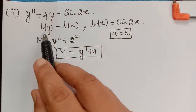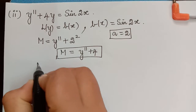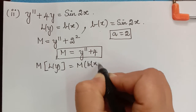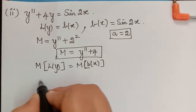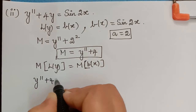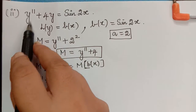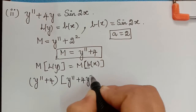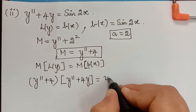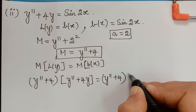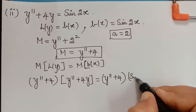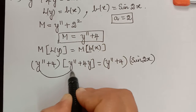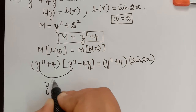Now we operate with M on both sides of the equation, that is M[L(y)] = M[B(x)]. M is (D² + 4) and L(y) is y'' + 4y, so we apply (D² + 4) to (y'' + 4y) on the left, and on the right we apply (D² + 4) to sin 2x.